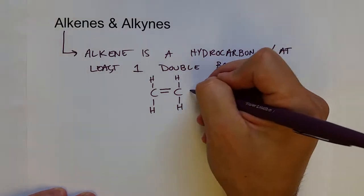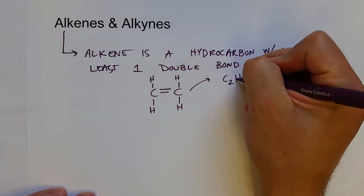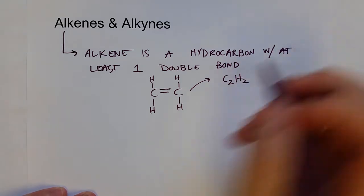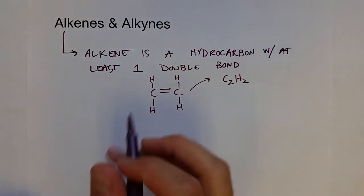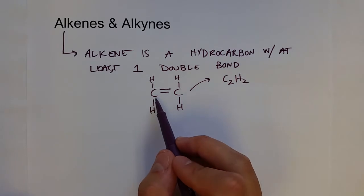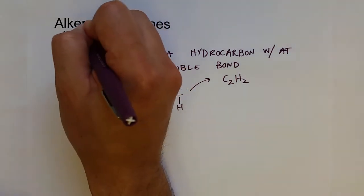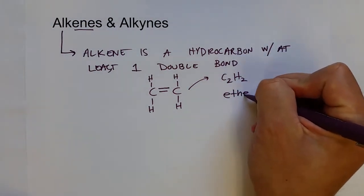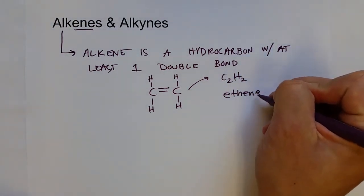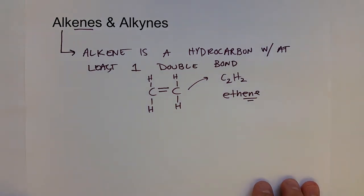The formula for this simplest alkene is C2H4, and the systematic name starts with the prefix from the alkane — ethane — but changes the ending to -ene. So this would be ethene, to show that it has a double bond.